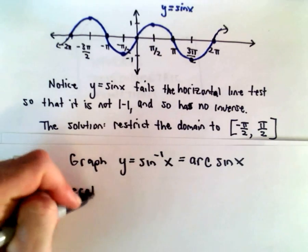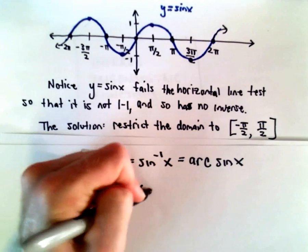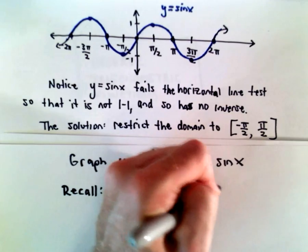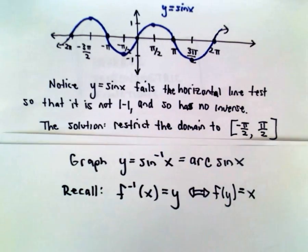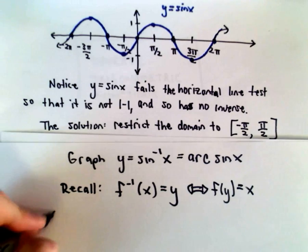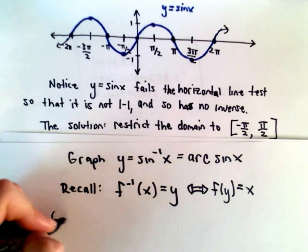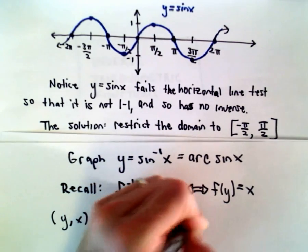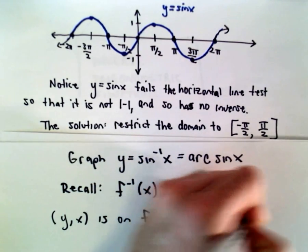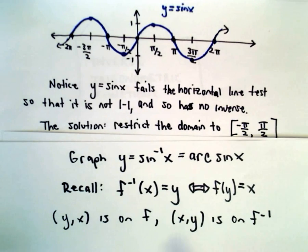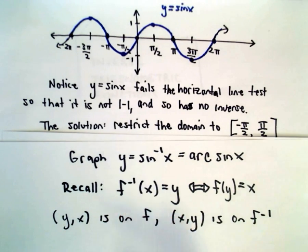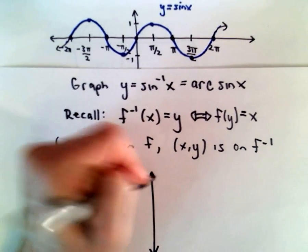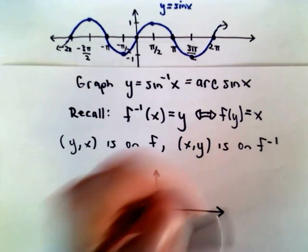Okay, so to get the graph, recall the definition of an inverse. It says f inverse of x equals y if and only if f of y equals x. So, all this says is if one point, in this case y comma x is on f, it says that x comma y is on the inverse function. So if you know points on one, switch them and you get points on the other.